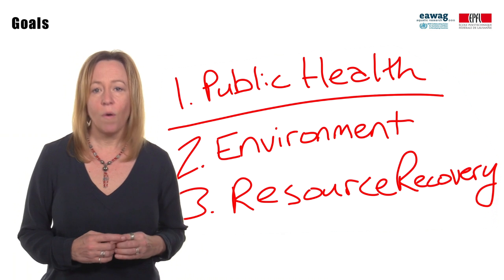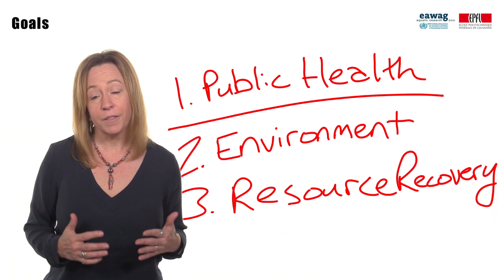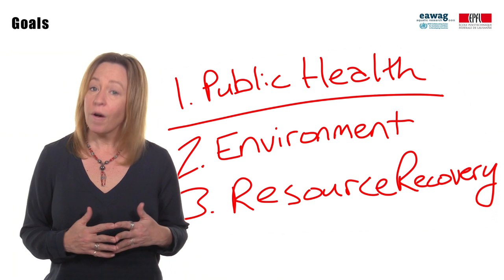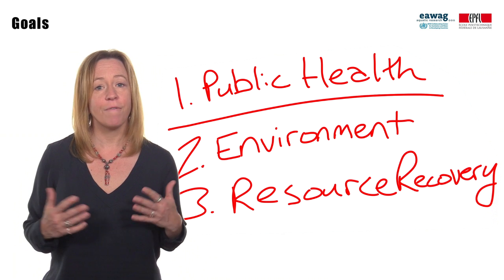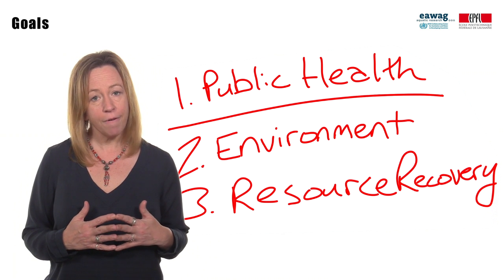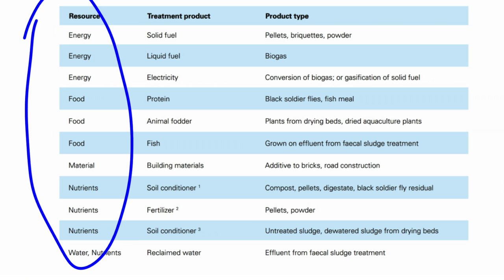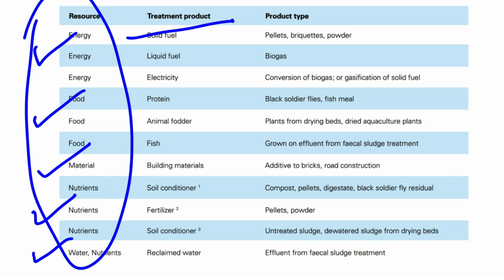The number one goal of fecal sludge management is always public health, but also related and important are environmental health and resource recovery. You now know multiple ways in which treatment products can be used for resource recovery, which ones are at different levels of established, innovative, or in development, and ways in which they can be used.